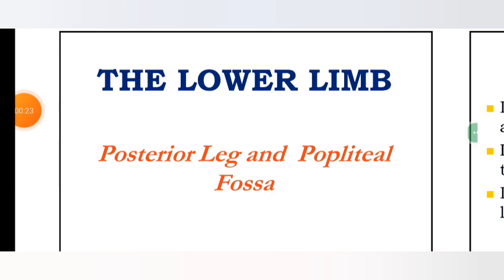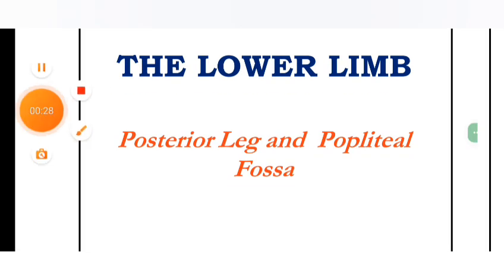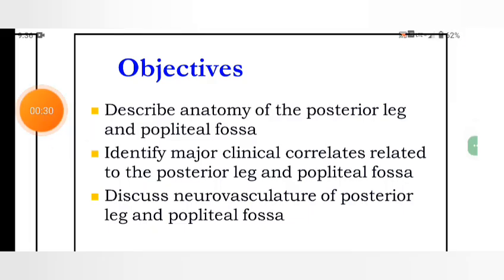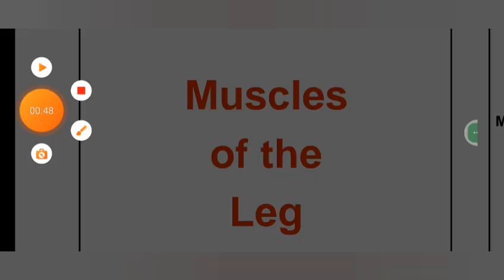Today's topic is the posterior leg and popliteal fossa. Objectives: describe anatomy of the posterior leg and popliteal fossa; identify major clinical correlates related to the posterior leg and popliteal fossa; discuss the neurovascular anatomy of the posterior leg and popliteal fossa.